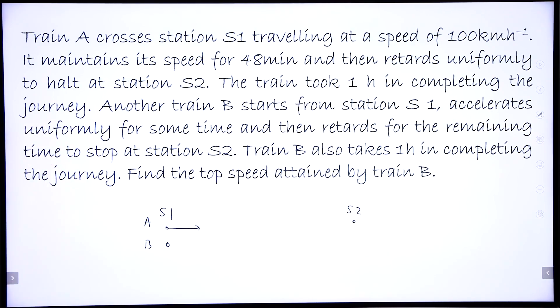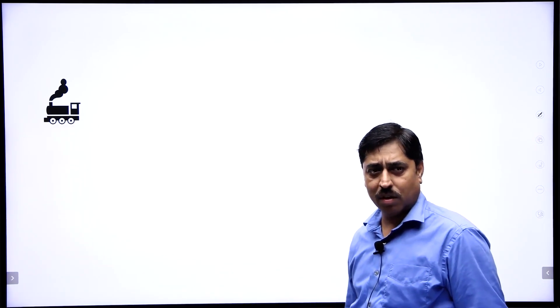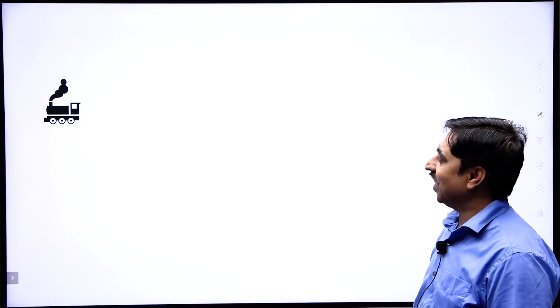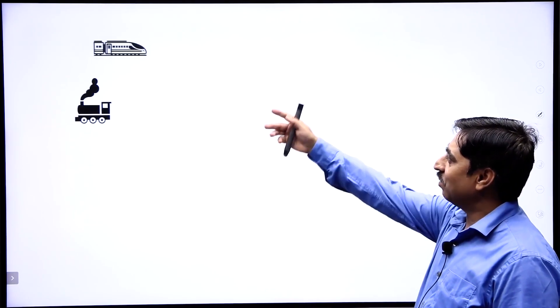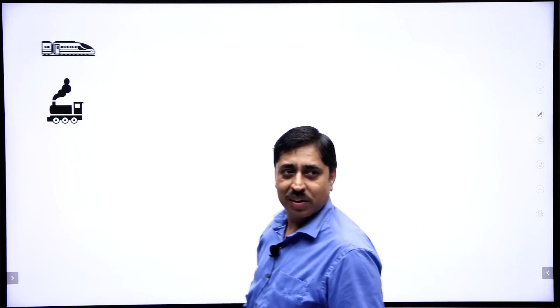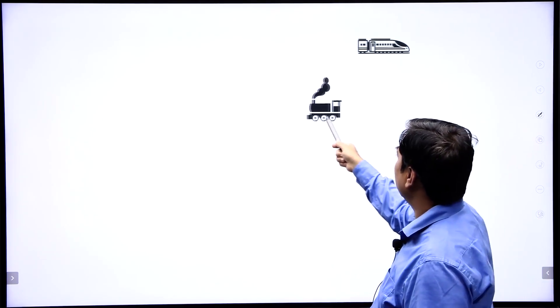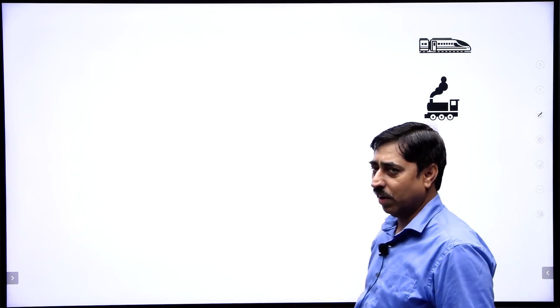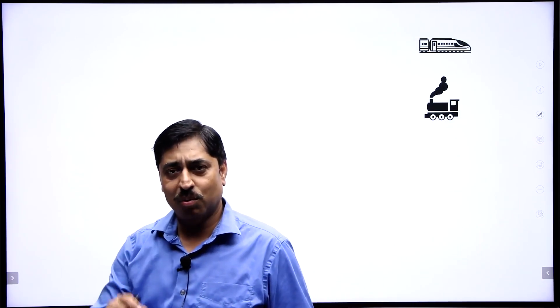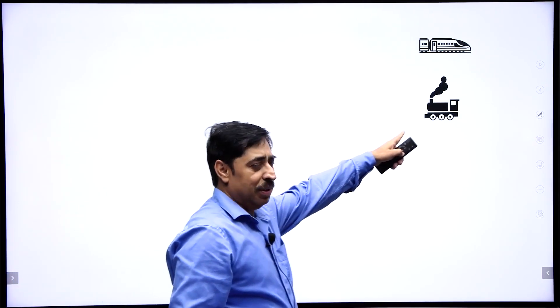Give it a try — I am sure if you try it, you will be able to do it. There is an animation showing what is happening. The top train crosses through station S1 traveling at some speed, while the other train starts from here, gains speed, then retards, and ultimately both trains stop at station S2 after one hour. We have to find the maximum speed of the second train.